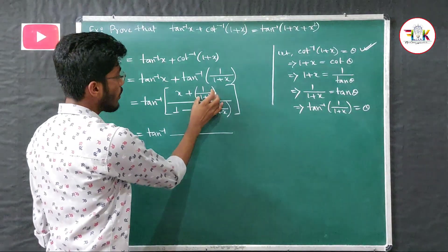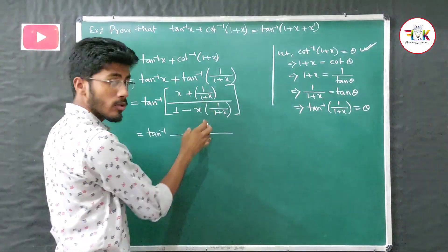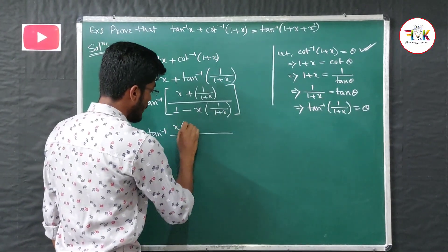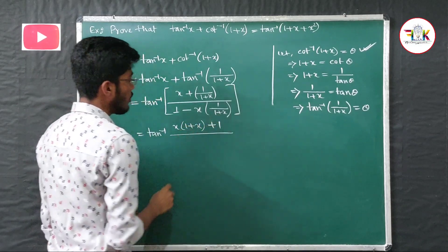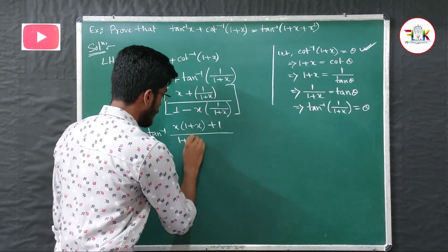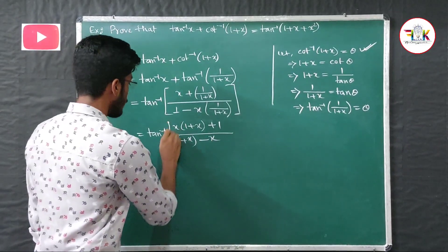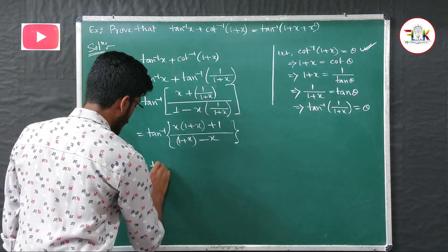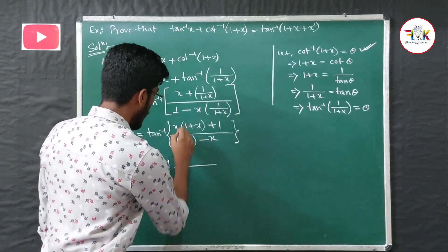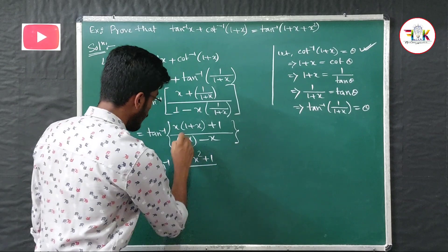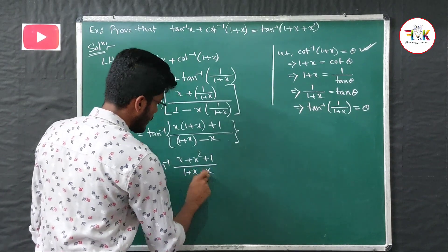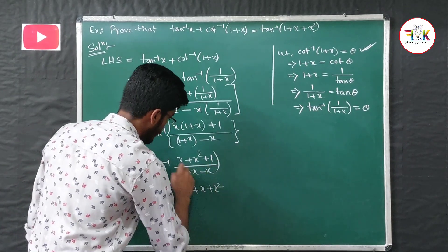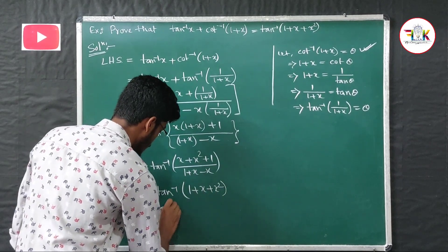Taking LCM as (1+x): the numerator becomes x(1+x) + 1, and the denominator becomes 1+x − x, where (1+x) cancels. This gives tan⁻¹[(x + x² + 1)/(1)], which is tan⁻¹(1 + x + x²). That is the right-hand side, so the proof is complete.